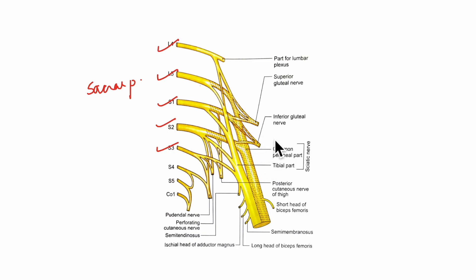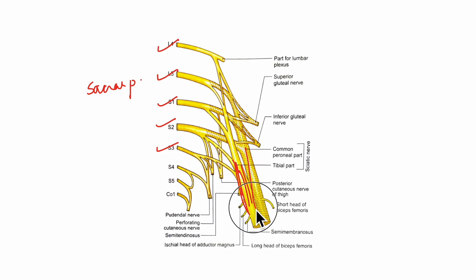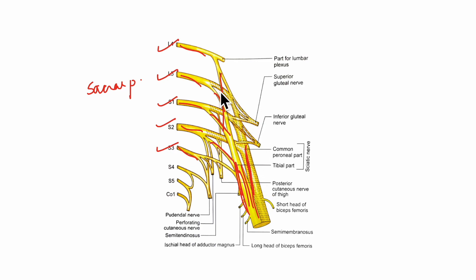The sciatic nerve is made up of two parts: the tibial part and the common peroneal part. The tibial part is formed by the ventral divisions of the anterior primary rami of L4, L5, S1, S2 and S3, whereas the common peroneal part is formed by the dorsal divisions of the anterior primary rami of L4, L5, S1, S2 and S3.